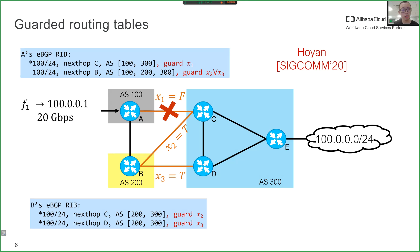We use Hoyan to obtain a routing table in which each route is guarded by a formula that describes under which failure scenarios the route will be present. For example, the route with next hop C at router B is guarded with X2, meaning that the route exists only if the link B to C is live. The second route at router A exists when either link B to C or link B to D is live, so it is guarded with X2 or X3.